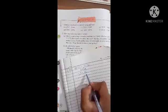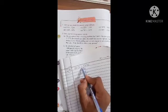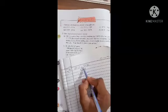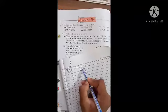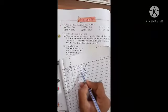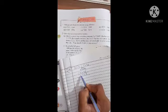Now 0 minus 4 is not possible, so we'll borrow again. We have 5 so it becomes 4, and we have 10. 10 minus 4 is 6. 4 minus 2 is 2. 6 minus 5 is 1.